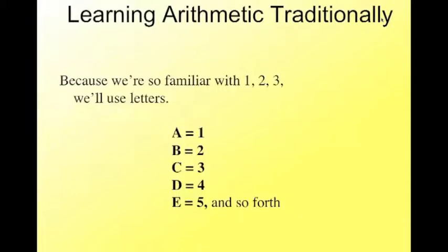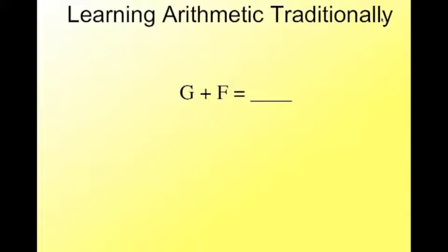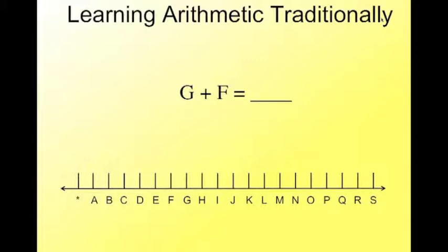So when we learn arithmetic traditionally, you guys all know how to add. But what we're going to do here, just to experience what it's like doing this as a child, is we're going to use, instead of 1, 2, 3, we're going to use letters. So A is 1, B is 2, C is 3. And we're going to go ahead and see what learning arithmetic looks like in this format. So what's G plus F? Well, let me help you out here. Let's use a number line because we have to use something. Good heavens. So here's G. That was pretty easy. And now we have to count out how many F is. So we have to do A, B, C, D, E, F. Oh, that's not so bad. The answer is M.